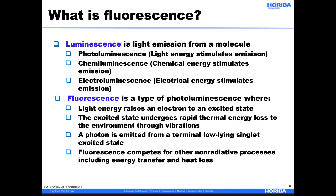Let's talk about what fluorescence actually means. The term fluorescence is actually one type of luminescence. Luminescence, broadly defined, is light emission from a molecule. Photoluminescence is when light energy or photons stimulate the emission of a photon. Chemiluminescence is defined as when chemical energy stimulates the emission of a photon, and this includes bioluminescence, as seen in fireflies and many forms of sea life. Electroluminescence is when electrical energy or a strong electric field stimulates the emission of a photon, such as in some lighting applications. Fluorescence, specifically, is a type of photoluminescence where light raises an electron to an excited state. The excited state undergoes rapid thermal energy loss to the environment through vibrations, and then a photon is emitted from the lowest lying singlet excited state. This process of photon emission competes with other non-radiative processes, including energy transfer and heat loss.